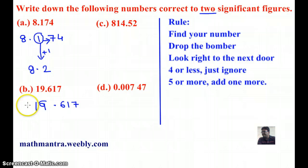Let's look at the second example, 19.617. So, the first significant figure is 1, second significant figure is 9, and the third significant figure is 6.